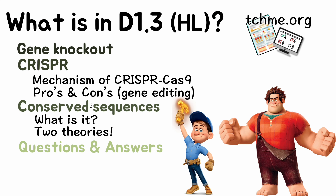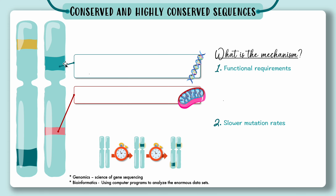Now let's talk about conserved and highly conserved sequences. Our DNA has long sequences — one sequence could be one gene and the next sequence of letters is another gene. A conserved sequence is one that barely ever gets mutations, and a highly conserved sequence is one that literally never gets mutations. We can look at someone's DNA from 500 years ago compared to someone's now and notice that some sequences stayed exactly the same while others had a lot of mutations over time.